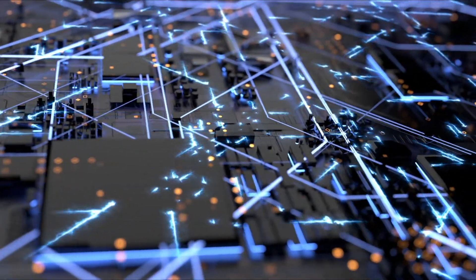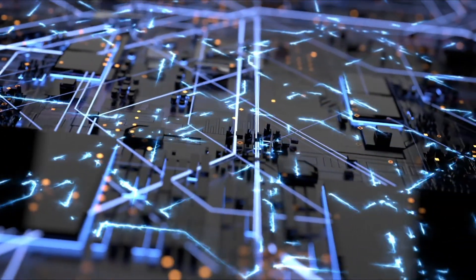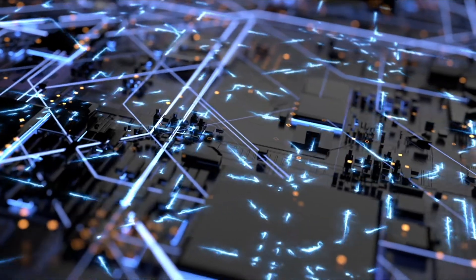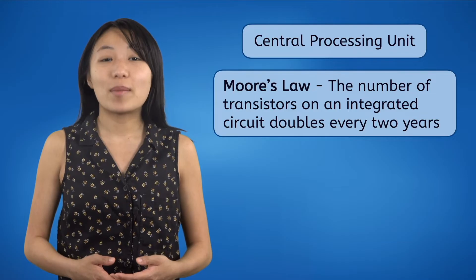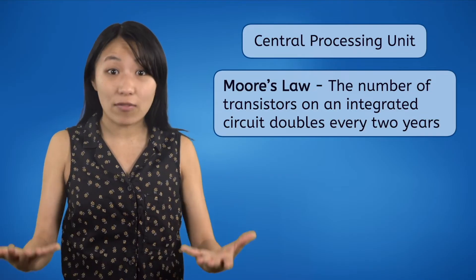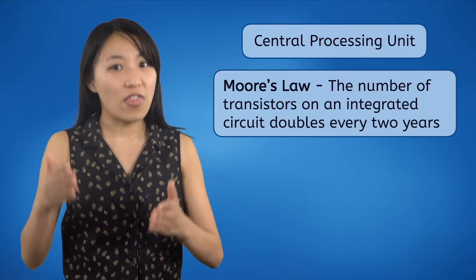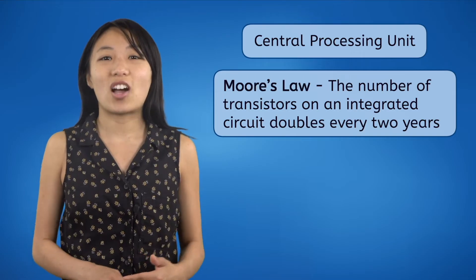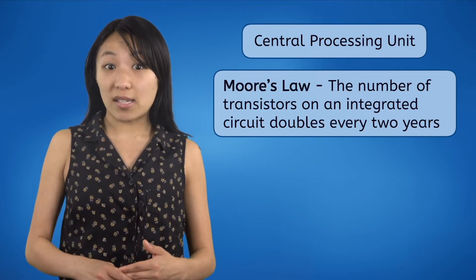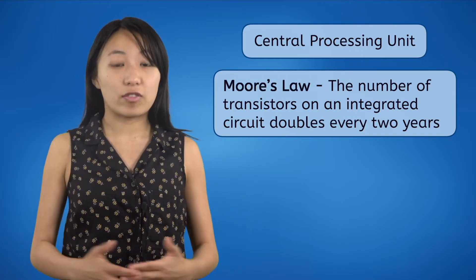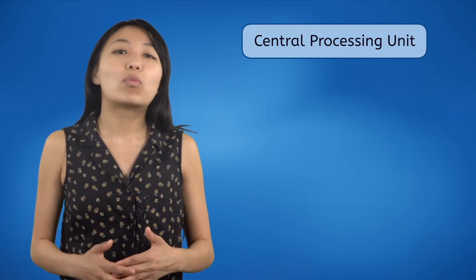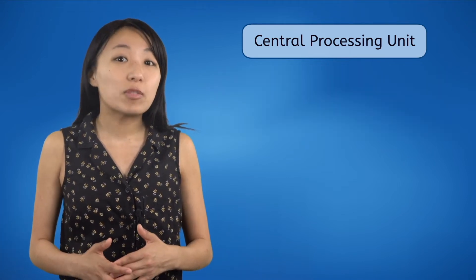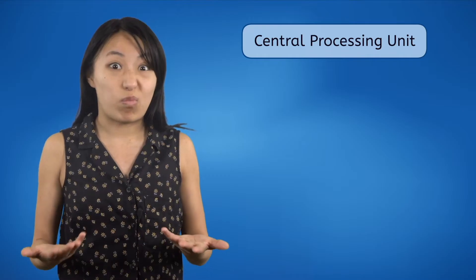These transistors are what make the CPU capable of transmitting data and performing complicated calculations. Remember Moore's Law about the number of transistors doubling every couple of years? This is what Gordon Moore was talking about — computer brains essentially doubling the amount of brain cells they have. Wild, right? When we say the CPU does calculations, we mean it.